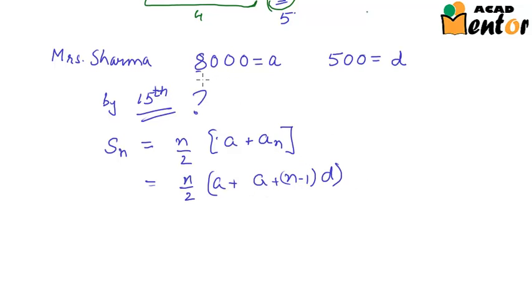For this example, a is known as 8000, d is 500 and n would be 15. Hence, the sum of amount that she would have deposited till now would be 15 by 2 into 2a, which would be 2 into 8000 plus 15 minus 1, 14 into 500.